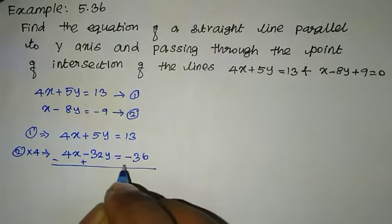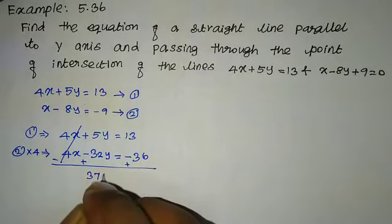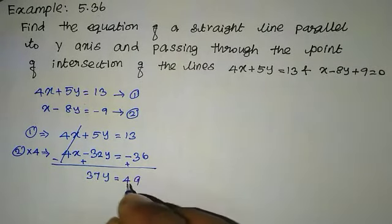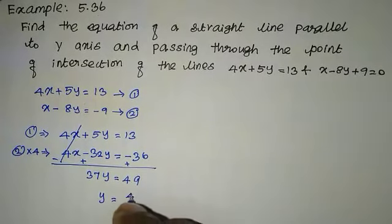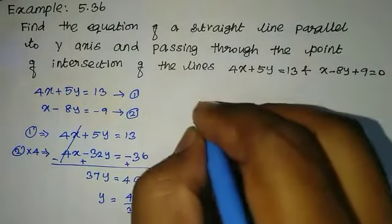After subtracting to eliminate 4x, we get 37y equal to 49. So y equal to 49 by 37.